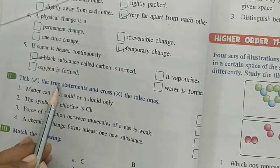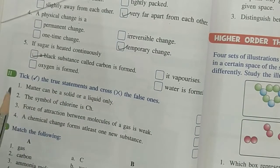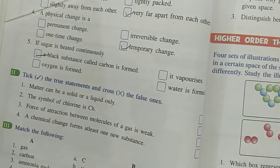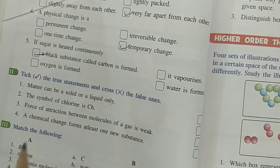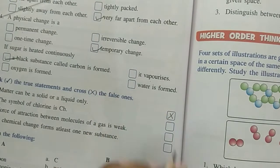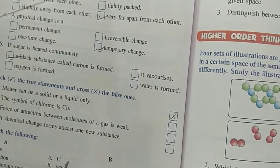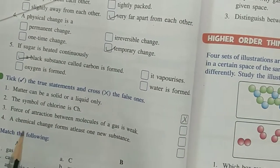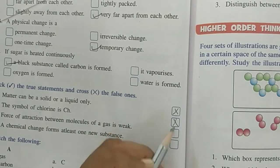Now, second question. Tick the true statement and cross the false one. Matter can be solid or liquid only. Matter is available in three states, not two. So this sentence is wrong. So you have to cross it here. The symbol of chlorine is CH. The symbol of chlorine is not CH, it is Cl. So this is wrong.